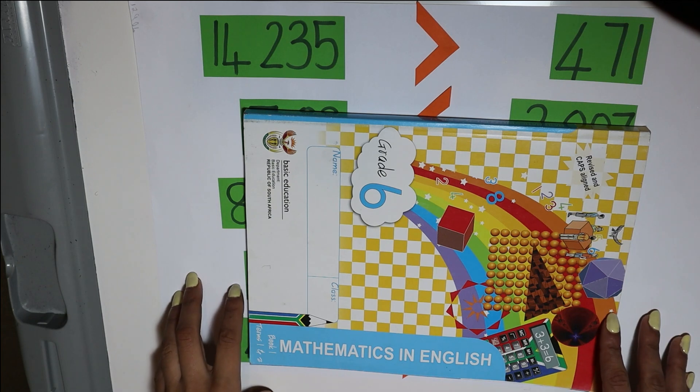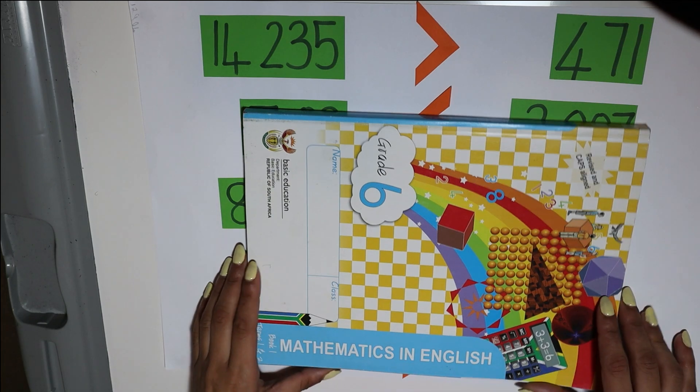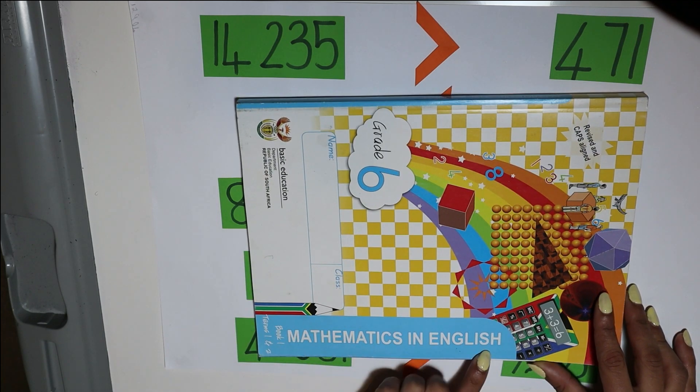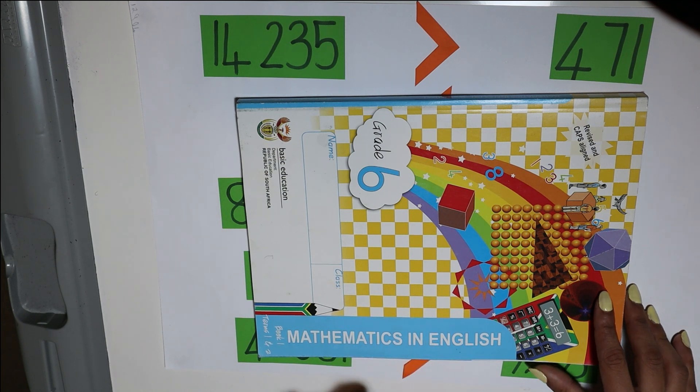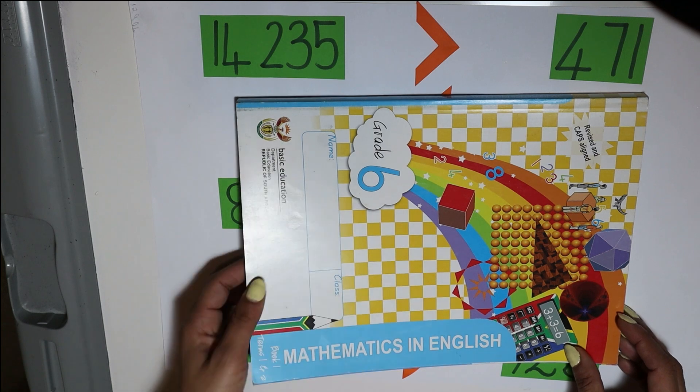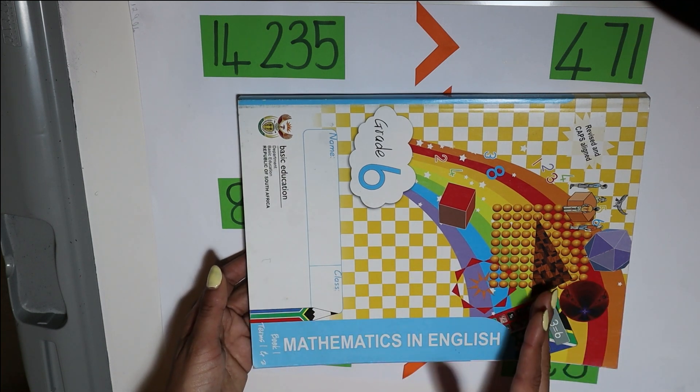When we read in general, the key thing is that we always read from left to right. For example, if I had to read this, I would read it as mathematics in English. I'm not going to say English in mathematics. So whenever I read anything, I always read it from left to right.